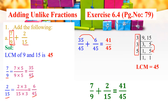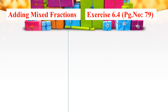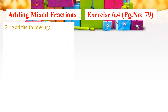Therefore, 7 by 9 plus 2 by 15 equals 41 by 45. The next concept is adding mixed fractions. Let us consider Exercise 6.4, page number 79, second problem: Add 4 and 11 by 20 plus 4 and 1 by 5. Here, both terms are mixed fractions.